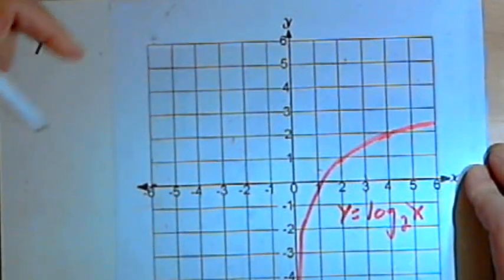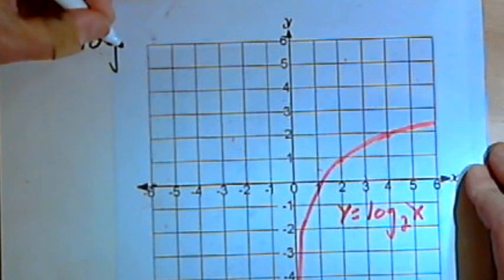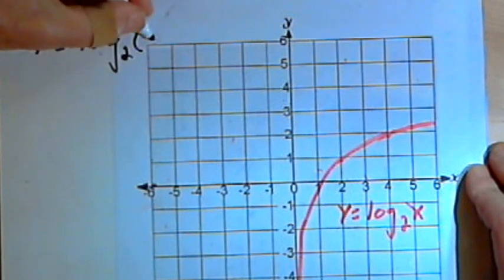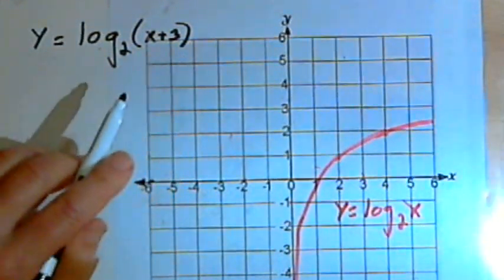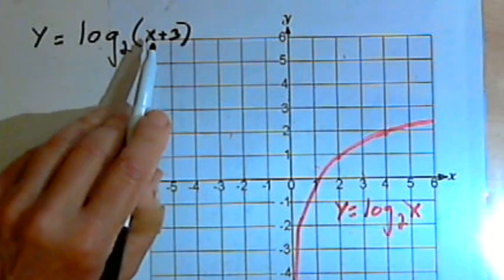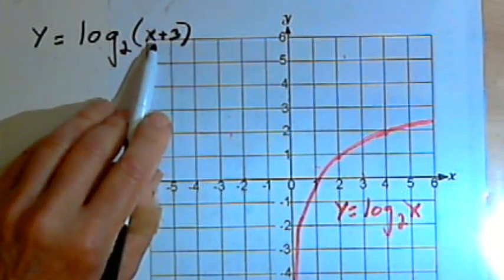So if we have the log base 2 of, let's say, x plus 3, with that entire x plus 3 in parentheses, as you've seen with other transformations, when we add a constant to the x-value,